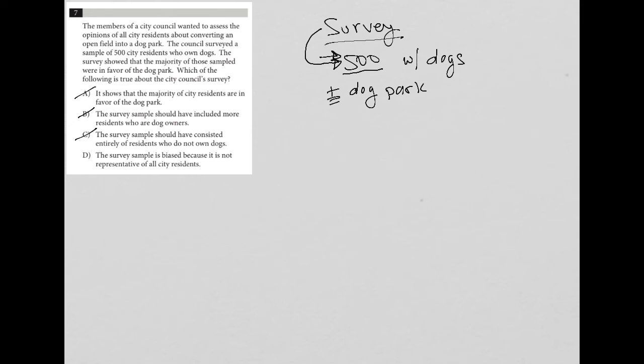Choice D, the survey sample is biased because it is not representative of all city residents. Well, choice D is definitely correct, really because of the single reason why choice A, B, and C are incorrect.